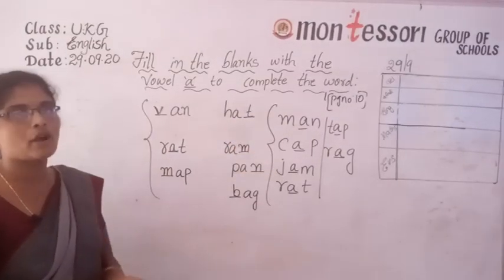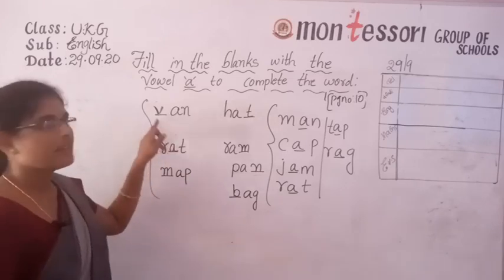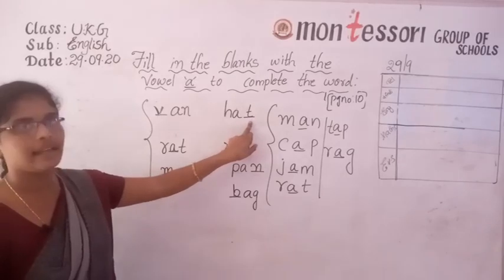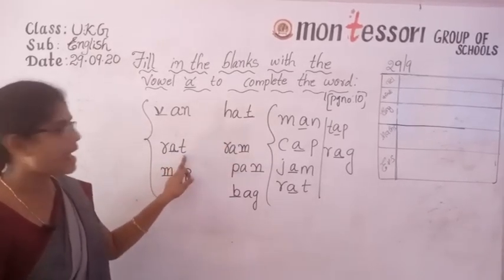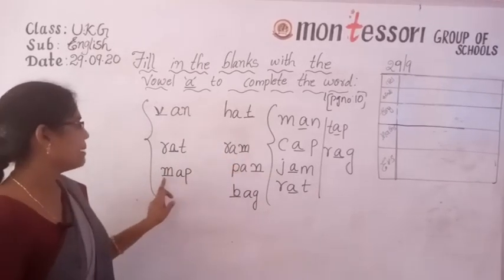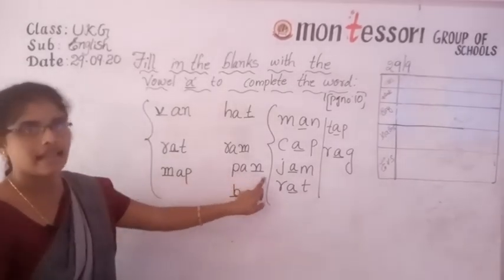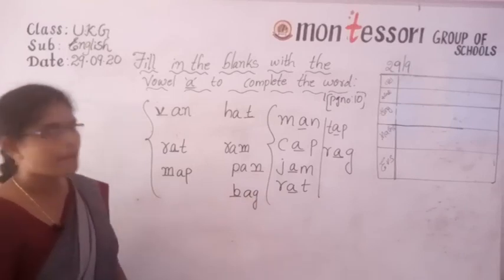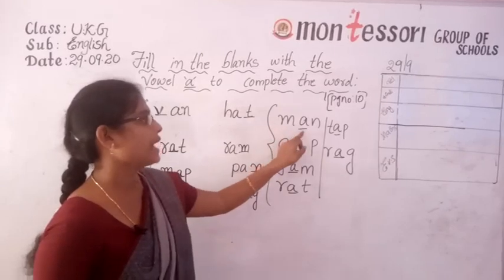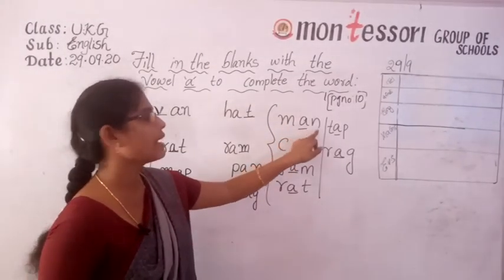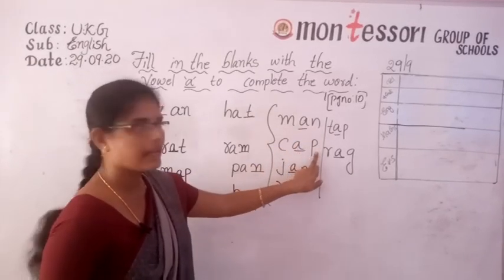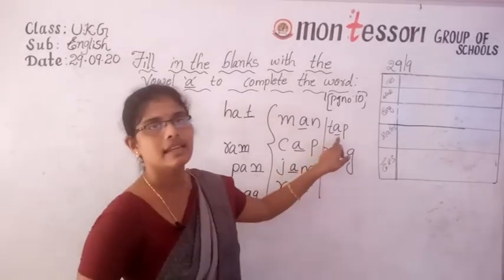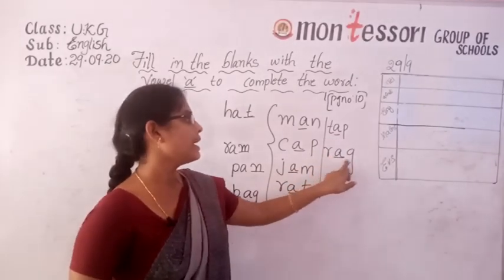One second, we will read together. Look at the board, all of you. Close your textbook and concentrate. V-A-N, van. H-A-T, hat. R-A-T, rat. R-A-M, ram. M-A-P, map. P-A-N, pan. B-A-G, bag. M-A-N, man. C-A-P, cap. J-A-M, jam. R-A-T, rat. T-A-P, tap. R-A-G.